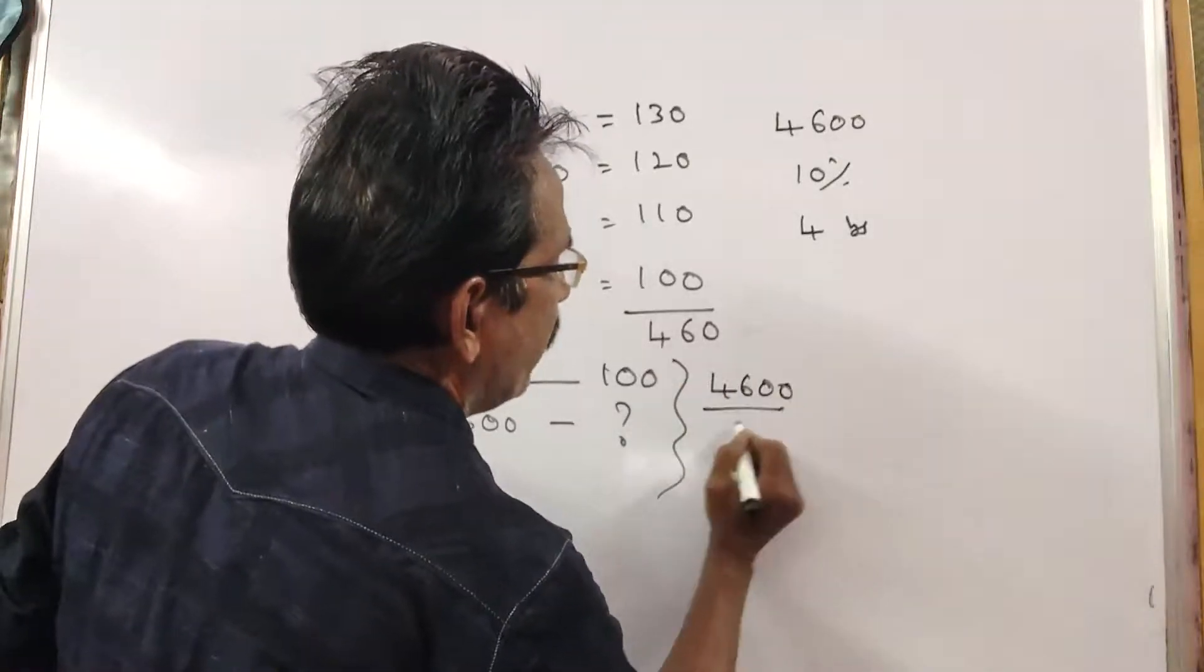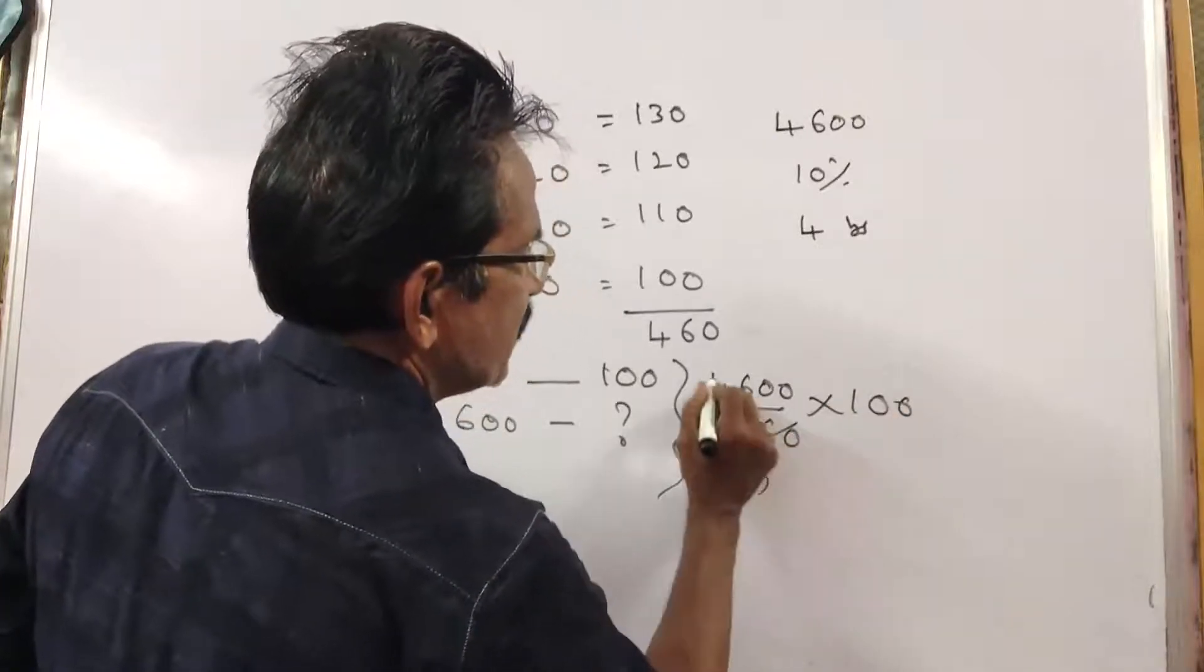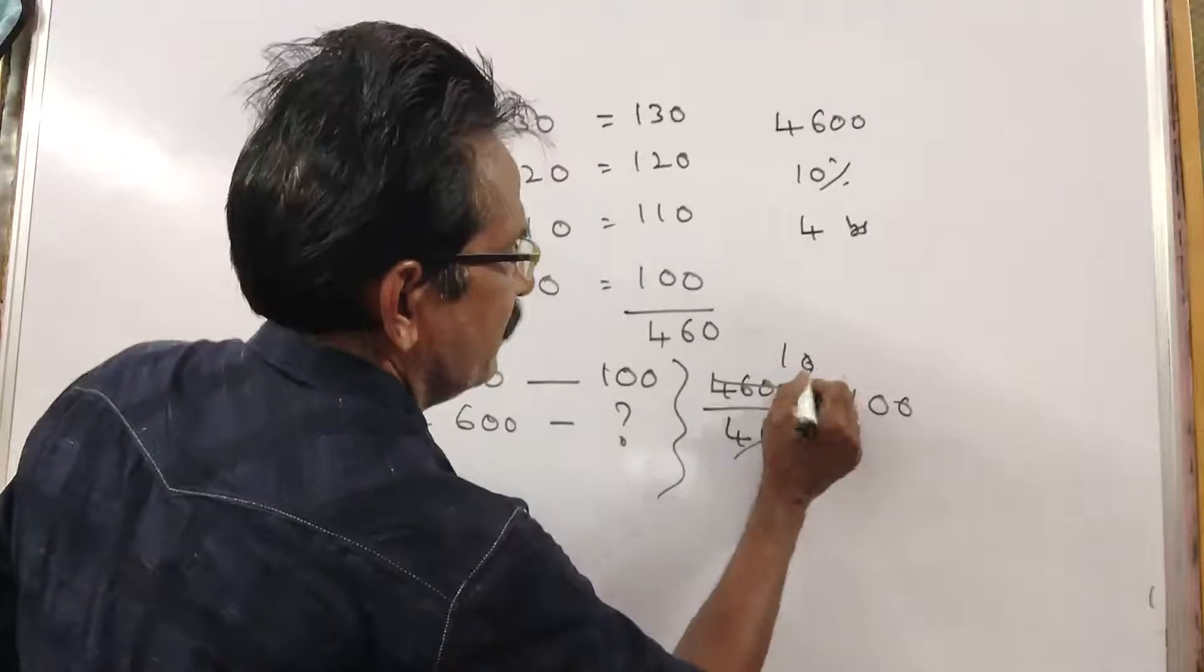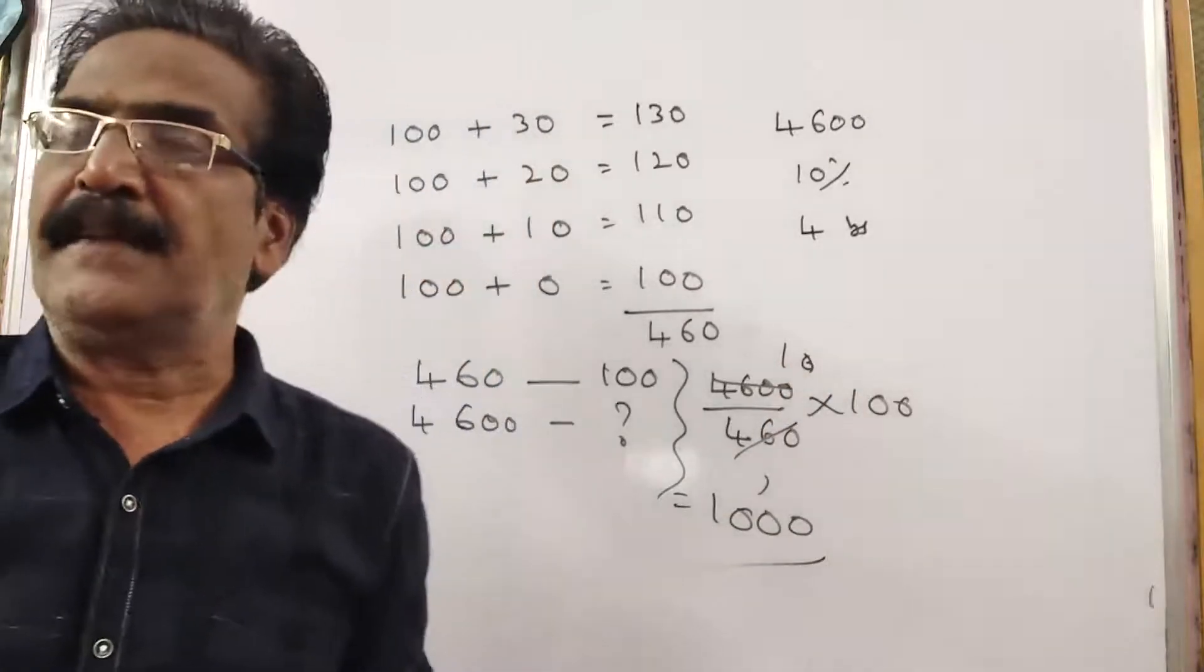4600 by 460, into 100. 10 into 100 is 1000. 1000 is the annual installment.